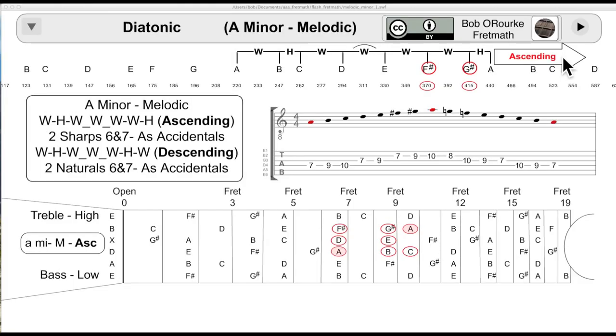Now we come to the third and final form, it's the melodic, and this is the weirdest of all. On the way up the scale or ascending, you raise both the sixth and seventh degree of the scale. Here in this case it's F and G, you raise them with a sharp to F sharp and G sharp.